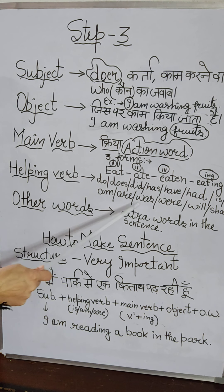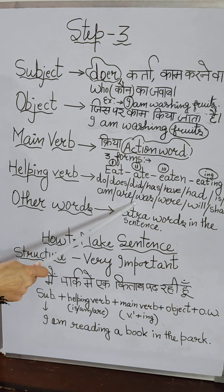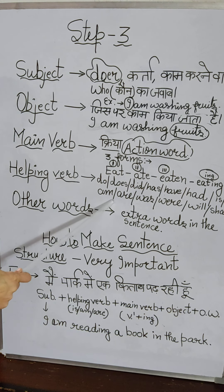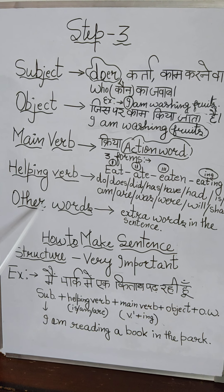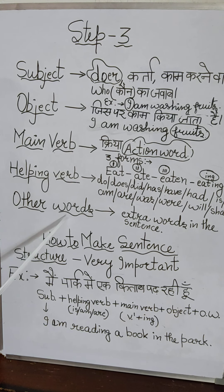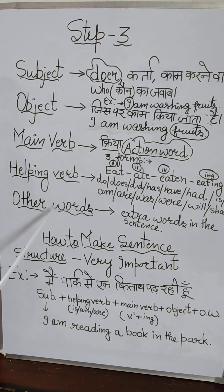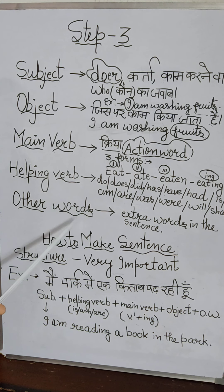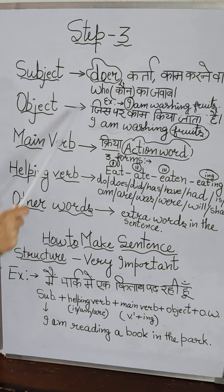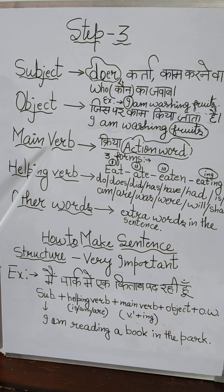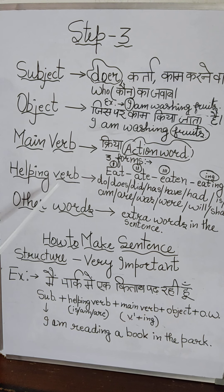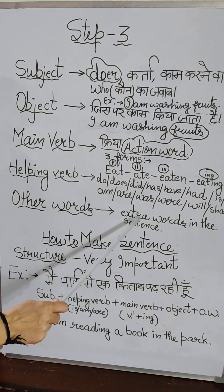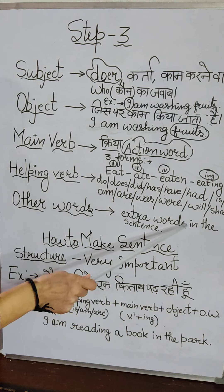I hope that you have learned these. With their help we can easily frame a variety of sentences. After that, we talk about other words — in short we also say 'OW'. Other words means the extra words in the sentence.